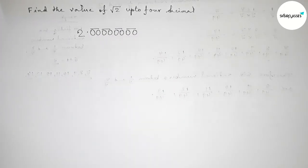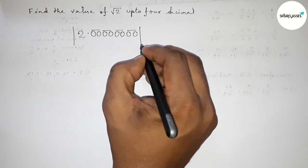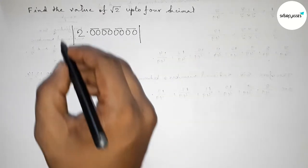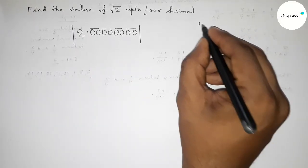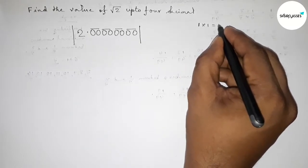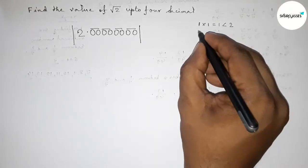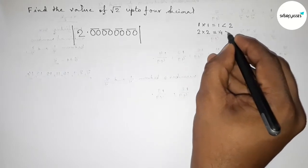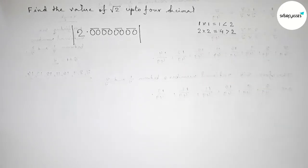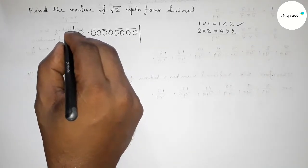We get four pairs of zeros. Now take a division line on both sides. Here is an important concept: choose a number and multiply it by itself. If we take 1, then 1×1=1, which is less than 2. If we take 2, then 2×2=4, which is greater than 2. So we should take 1, as it is less than and nearest to 2.